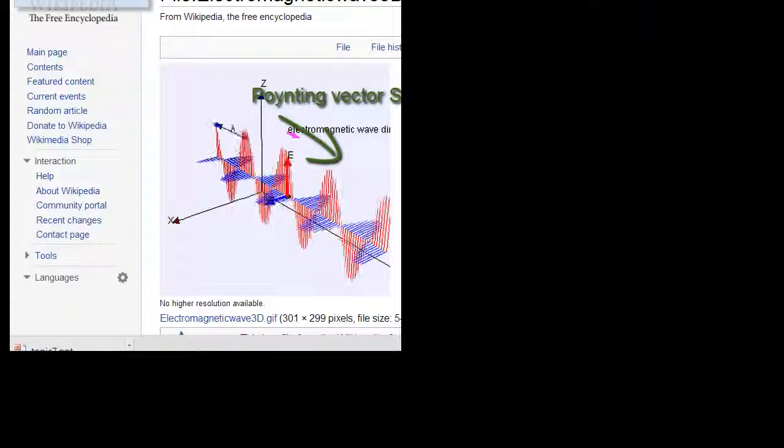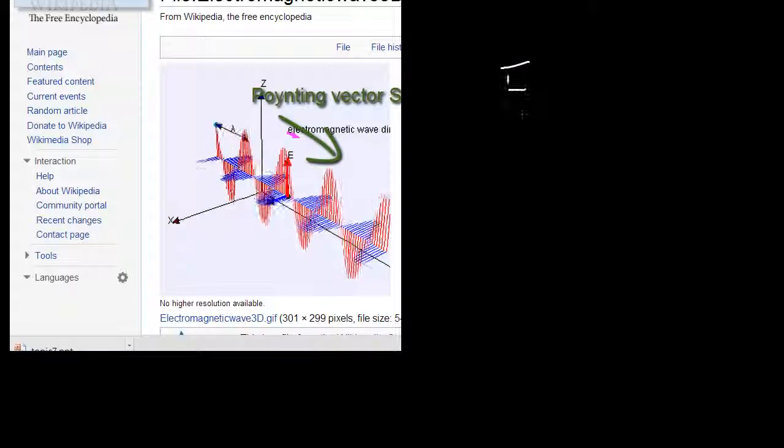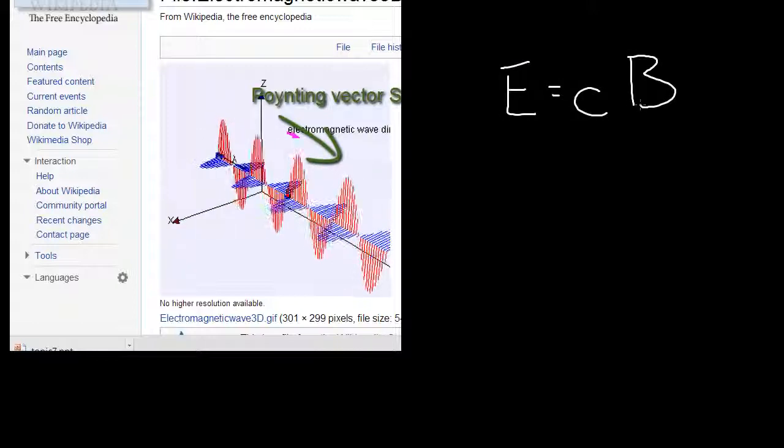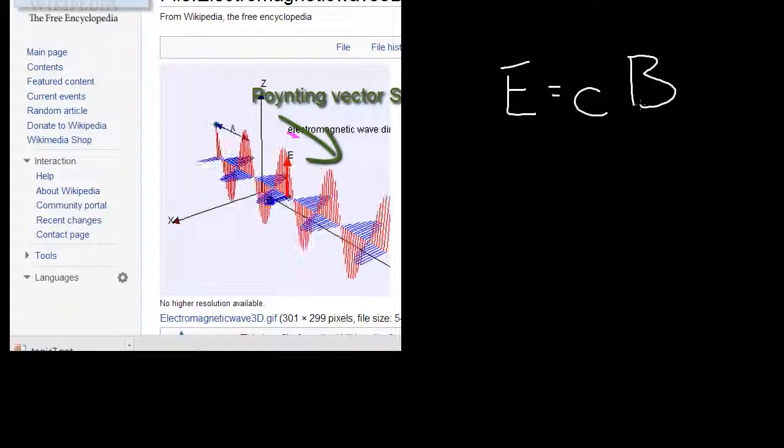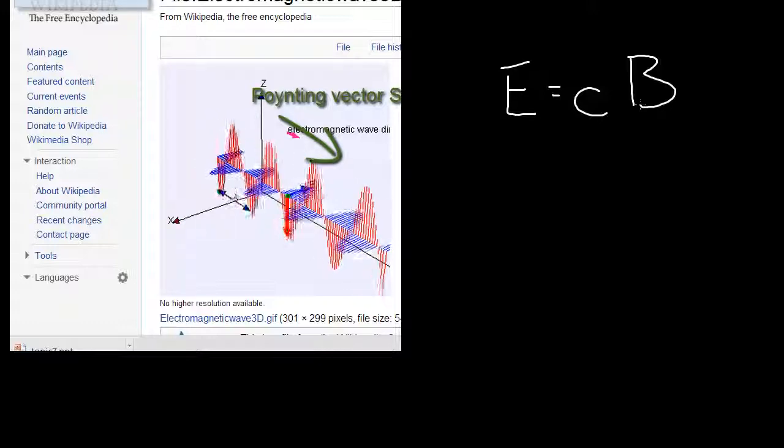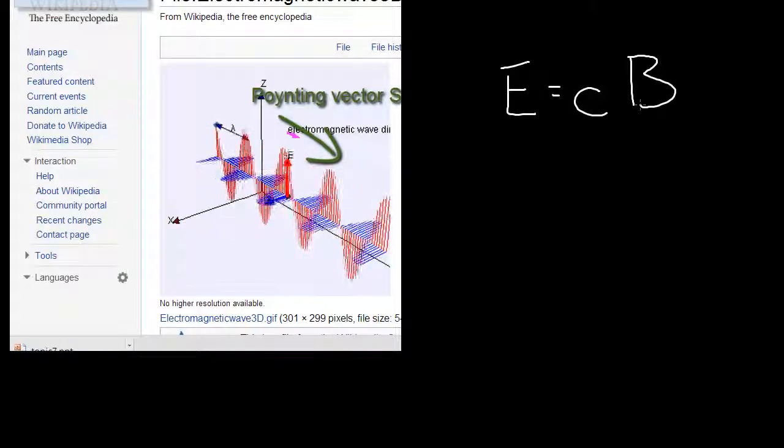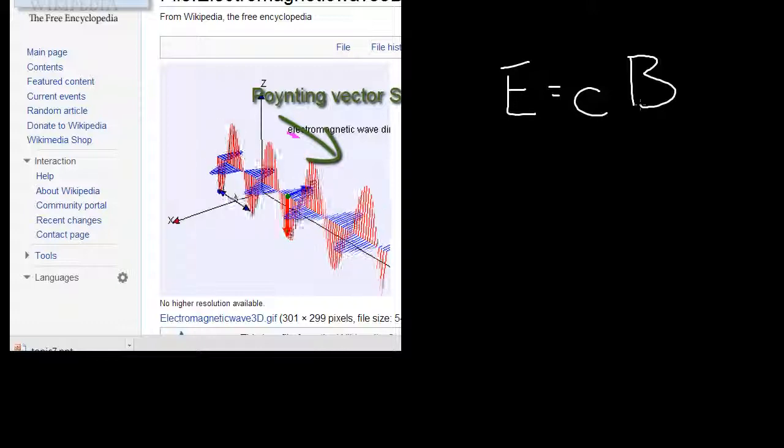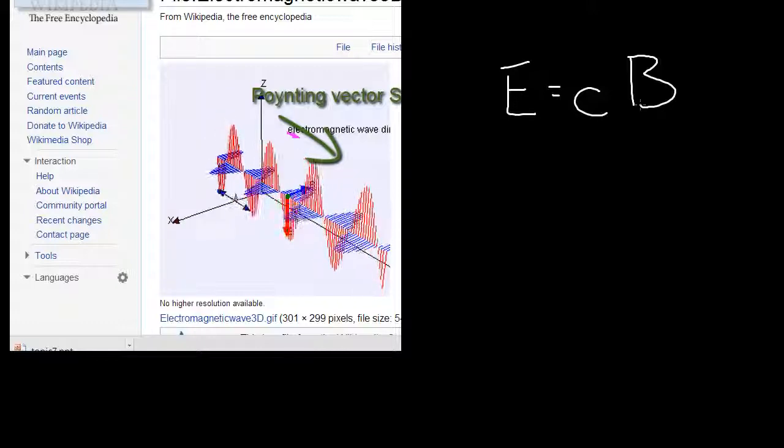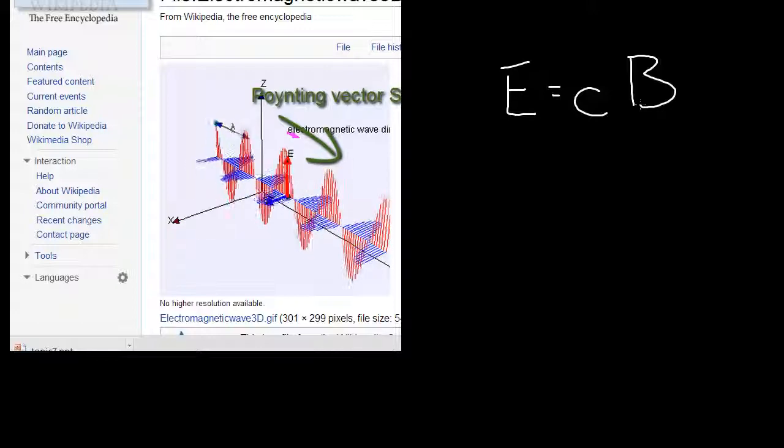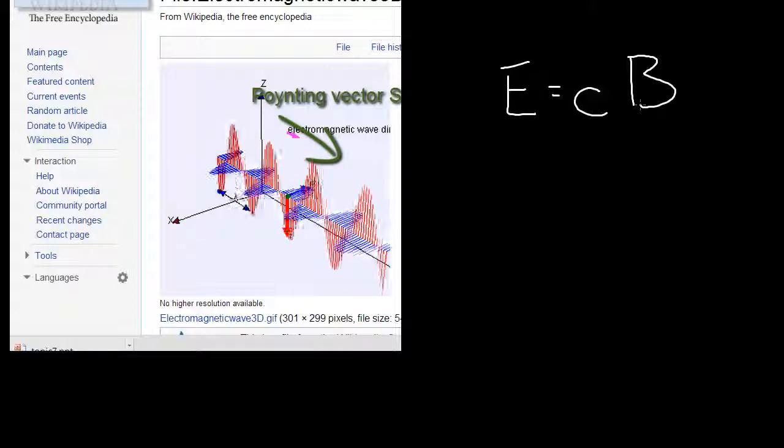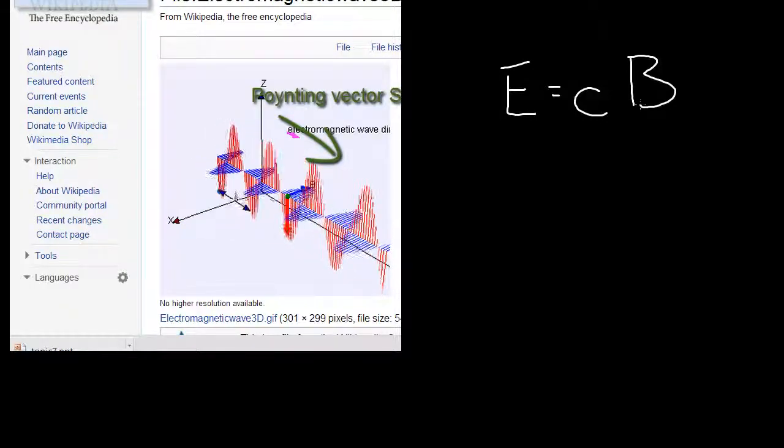And in terms of magnitude, we have the electric field is C times B. Because C is so big, E tends to have a much bigger number than B would. So often we'll just talk about E instead. And this solution, once given the direction of the electric field and the direction of propagation, we've completely defined what direction and magnitude the magnetic field would be. And this on the whole is called the transverse electromagnetic wave solution.